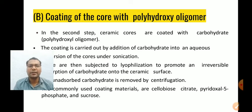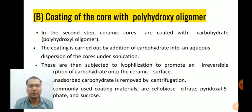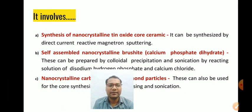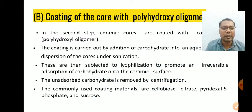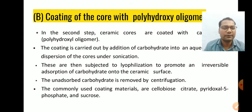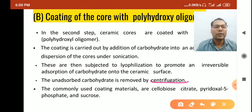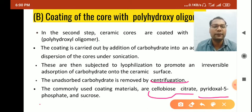The second step is the coating of the core with a polyhydroxy oligomer. In this step, ceramic cores are coated with a carbohydrate such as a polyhydroxy oligomer. The coating is carried out by addition of carbohydrate into an aqueous dispersion of the cores under sonication. These are then subjected to lyophilization to promote irreversible adsorption of carbohydrate onto the ceramic surface. The unadsorbed carbohydrate is removed by centrifugation. Commonly used coating materials are cellobionate, pyridoxal 5-phosphate, and sucrose.